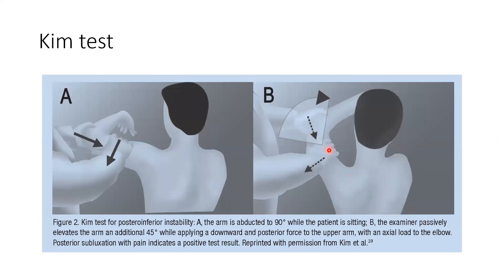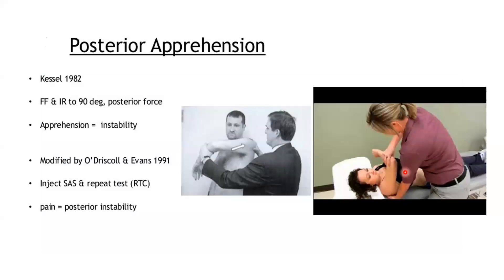The posterior apprehension test: place one hand on the posterior shoulder, internally rotate, and apply axial load. The patient will feel apprehension — feeling like the shoulder is dislocating. Imaging for posterior instability: AP plain radiograph can show a light bulb sign but it's not reliable. Axillary view is the best view. The Velpeau view is used if the patient cannot abduct the arm for axillary view.